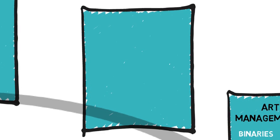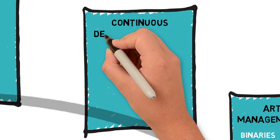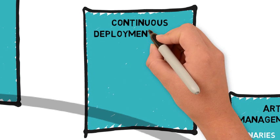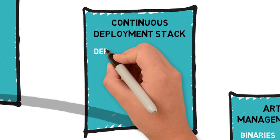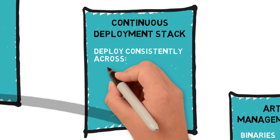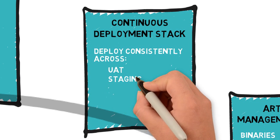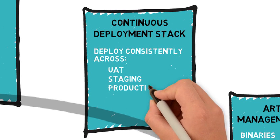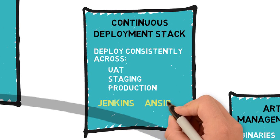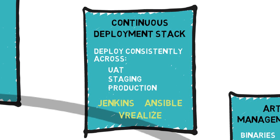The next stack focuses on continuous deployment and provides support for consistent deployments to every environment — UAT, staging, and production. You can use tools like Jenkins, Ansible, vRealize Automation, and vRealize Orchestrator.